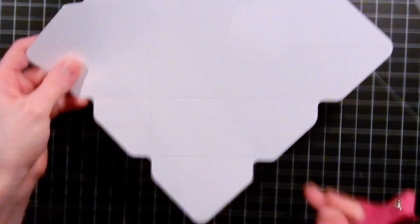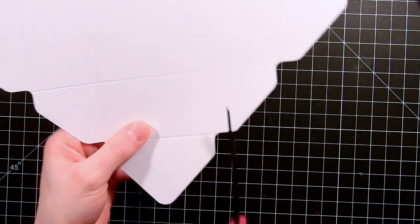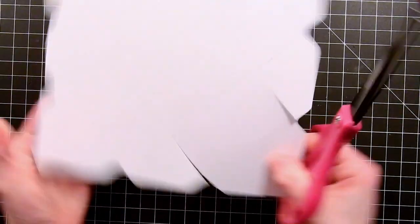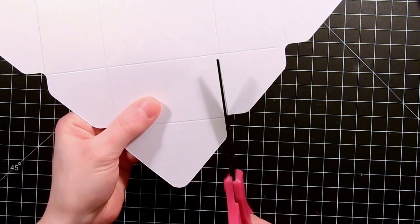Next we're going to take some scissors and we're going to cut along the score lines of two of the flaps. So we're going to cut along the score lines here all the way to the center of the box. Then we're going to rotate it 180 degrees and we're going to do the same thing on the other side.